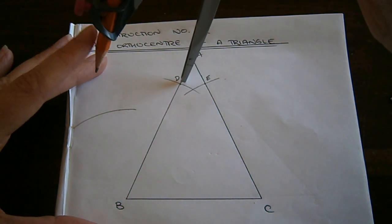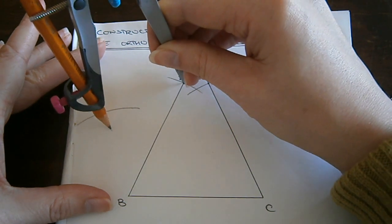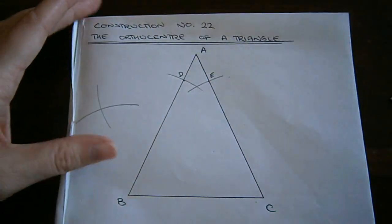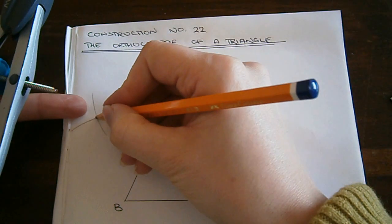I put the compass point on D this time. I make sure I keep the width the same and I draw an arc that intersects that initial arc. Let's call this point F.